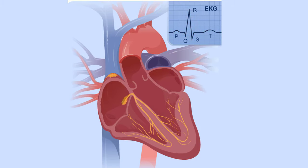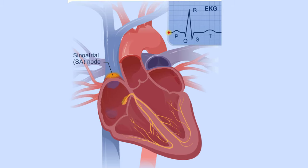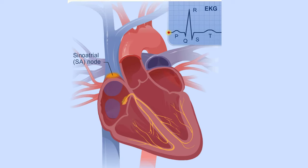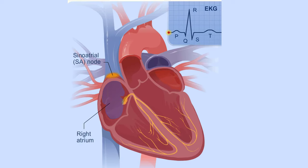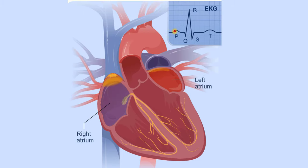Each beat of your heart begins with an electrical signal from the sinoatrial node, also known as the SA node. The SA node is located in your heart's right atrium. When your heart's right atrium is full with blood, the electrical signal spreads across the cells of your heart's right and left atria.